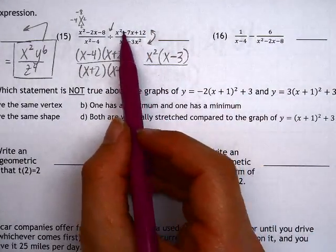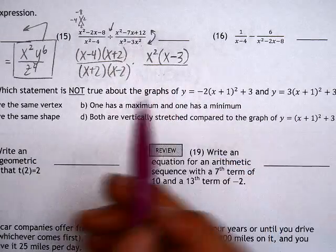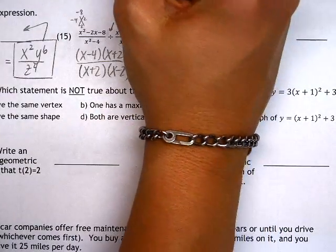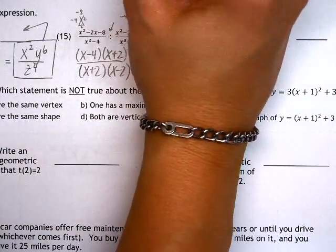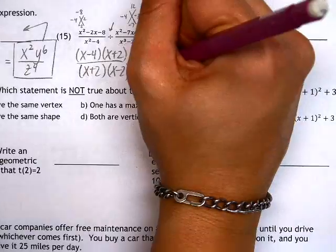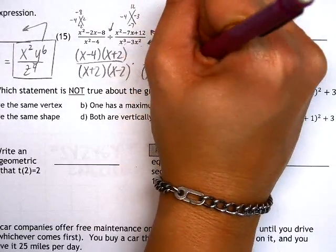Now if we look at the top which becomes the bottom, we have another trinomial which we can treat like a diamond. Numbers that multiply to 12 and add to negative 7. Those numbers would be negative 4 and negative 3, so our factors are x - 4 and x - 3.